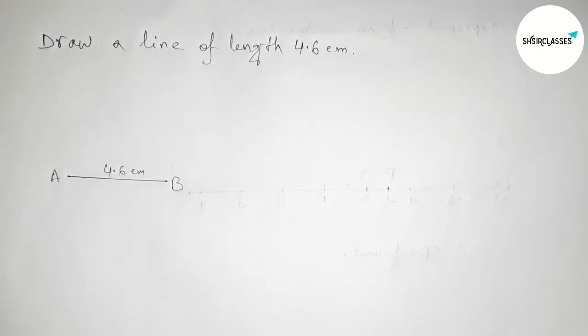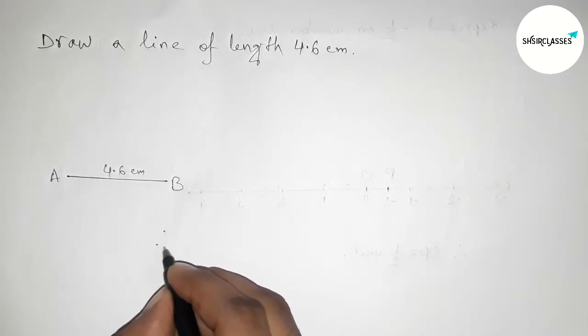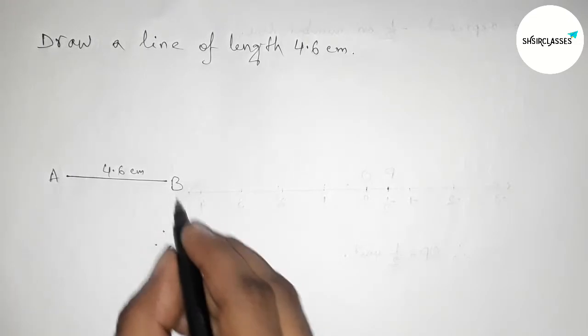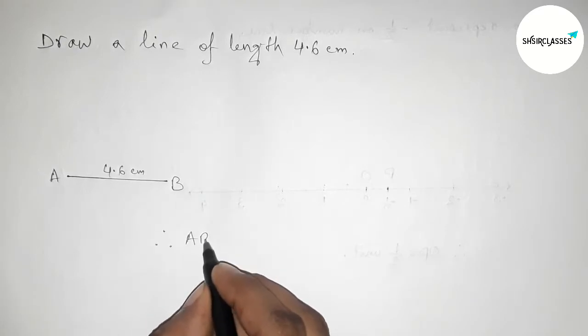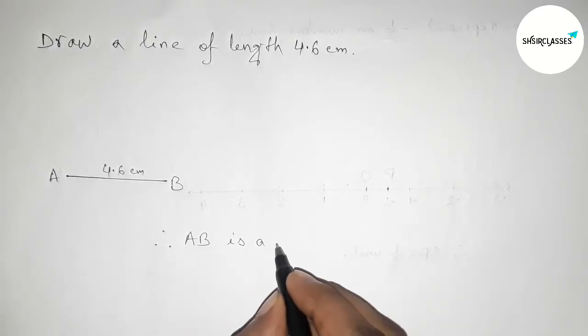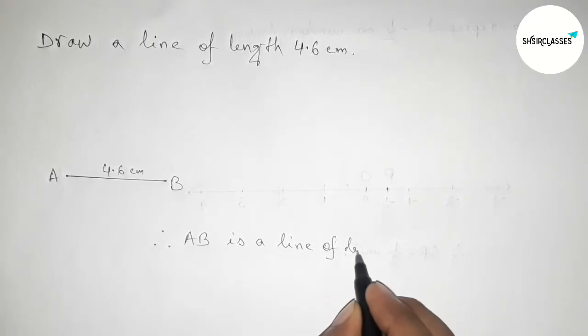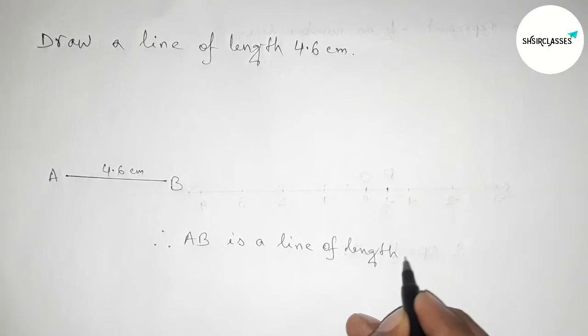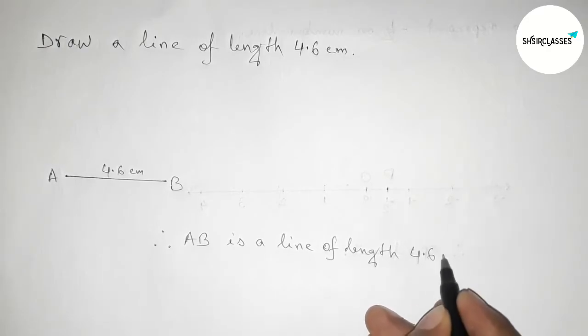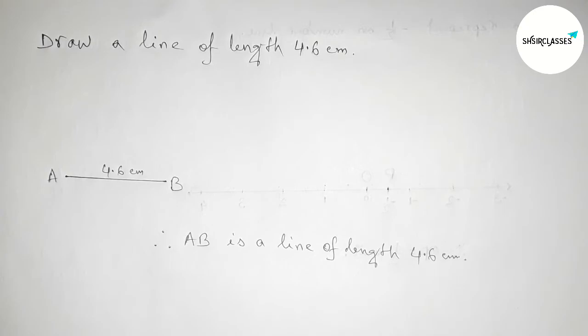Therefore, AB is a line of length four point six centimeter. By this way, you can draw a line of length 4.6 centimeter by using a scale.